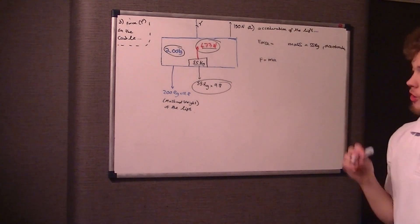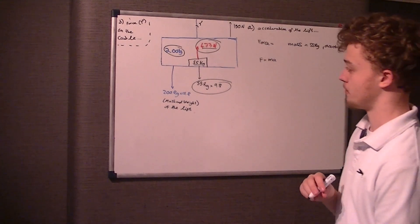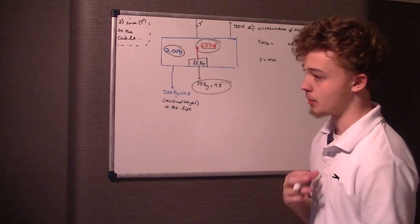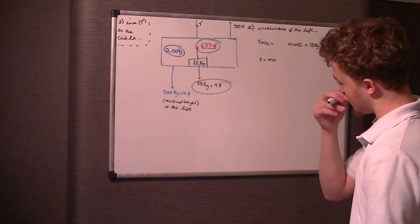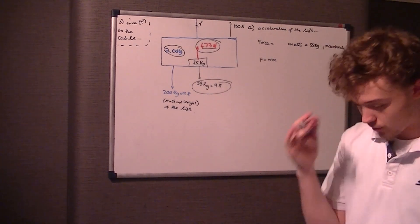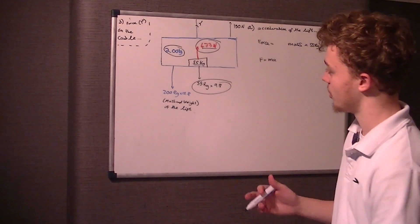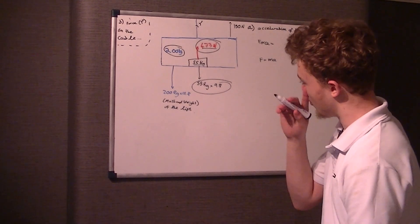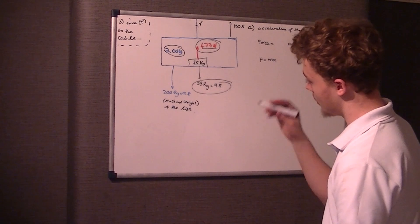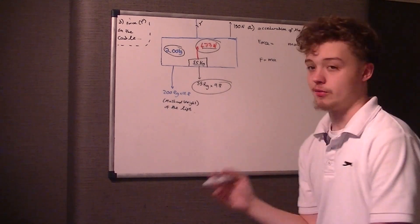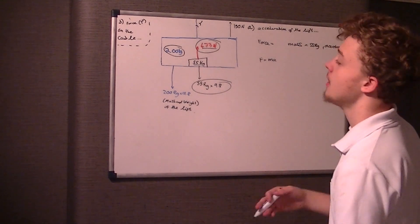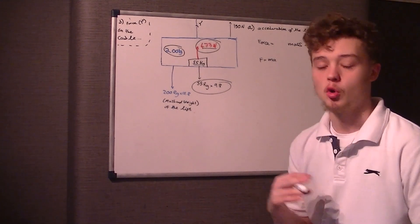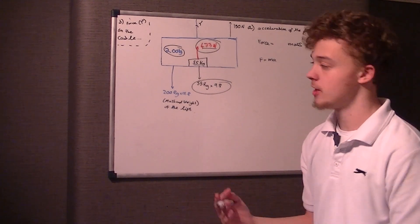It's key to focus just on this 55 kilogram box. We know it's moving down, so we're going to take 55 kilograms times 9.8 away from the 473 newtons — otherwise we'd end up with a negative force.